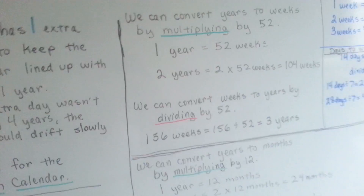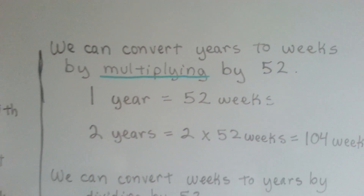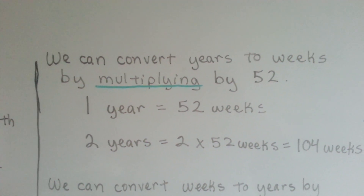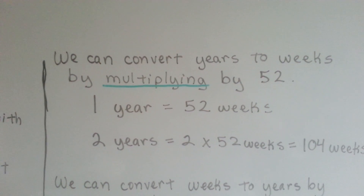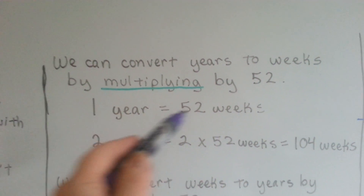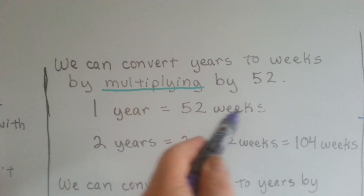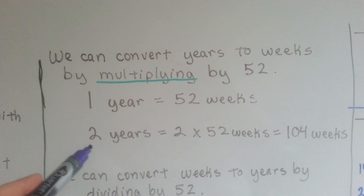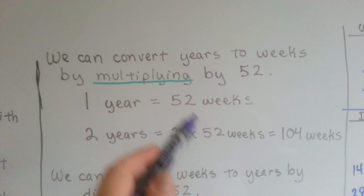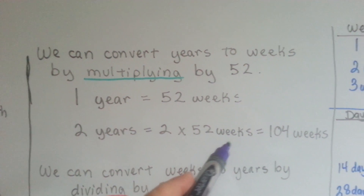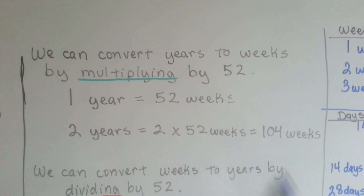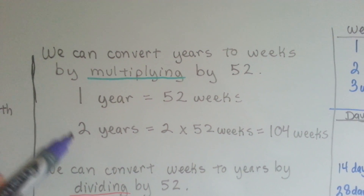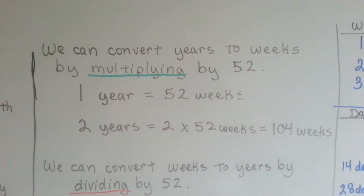We can convert years to weeks by multiplying by 52, because there are 52 weeks in every year. We use this formula to help us multiply. So 2 years — we multiply 2 times the 52 weeks in each year — and we get 104 weeks. And we could do it for 3, 4, 5, 6, just multiplying by 52.